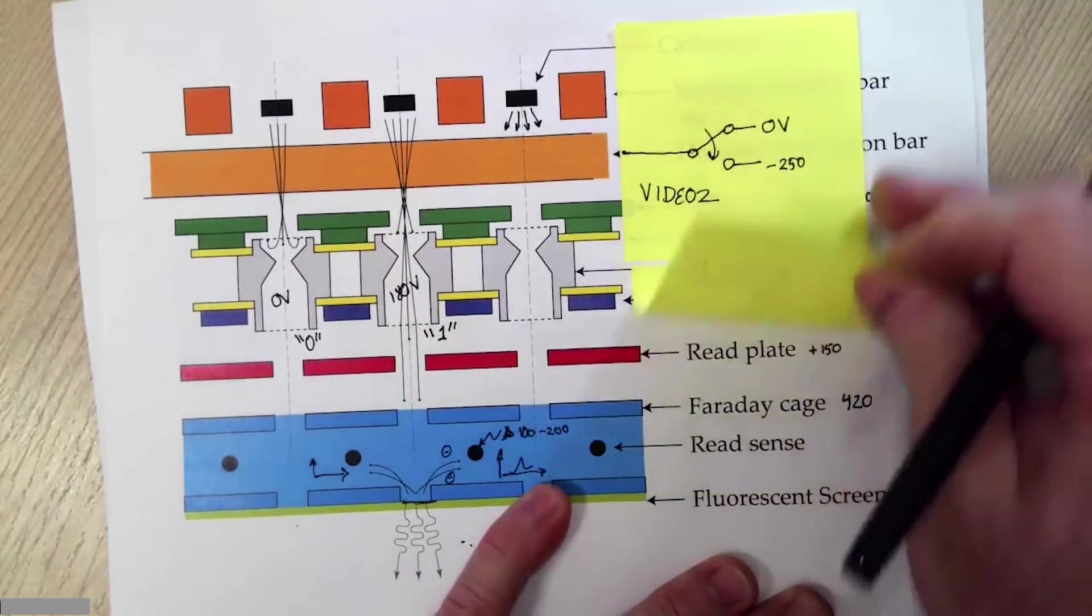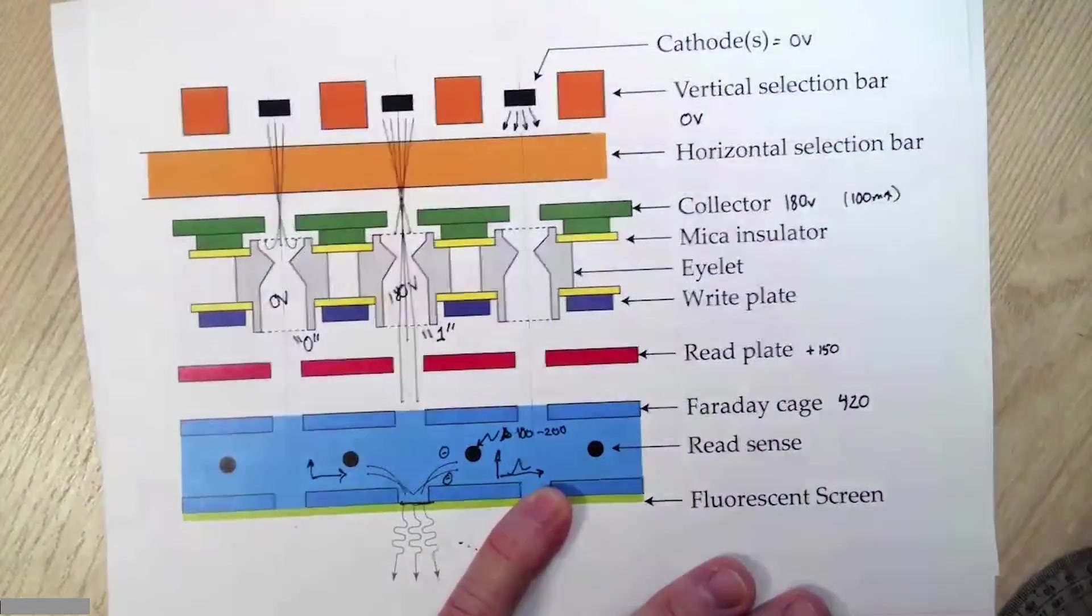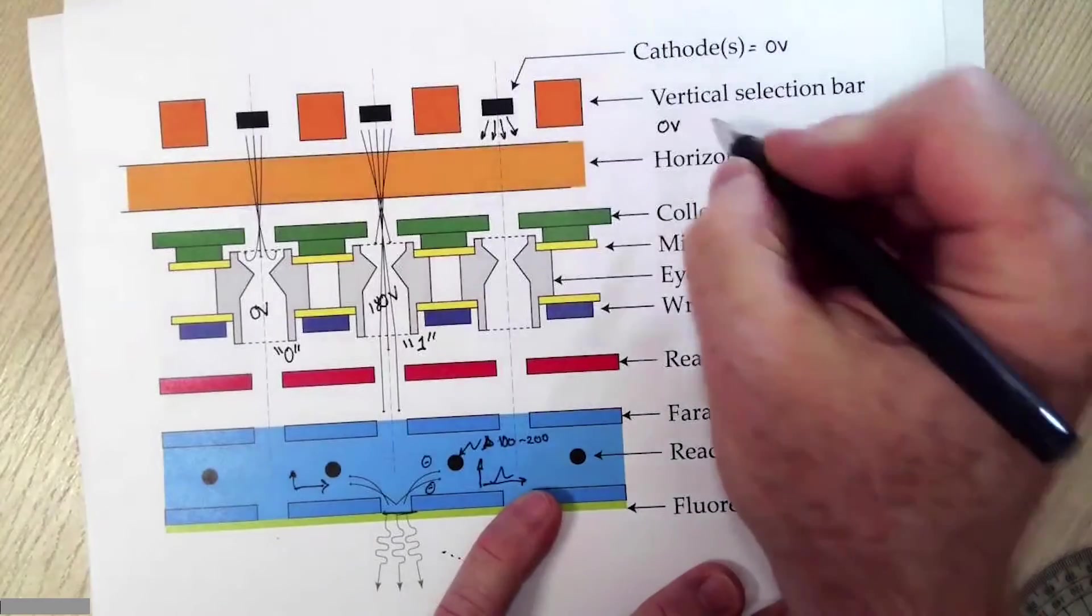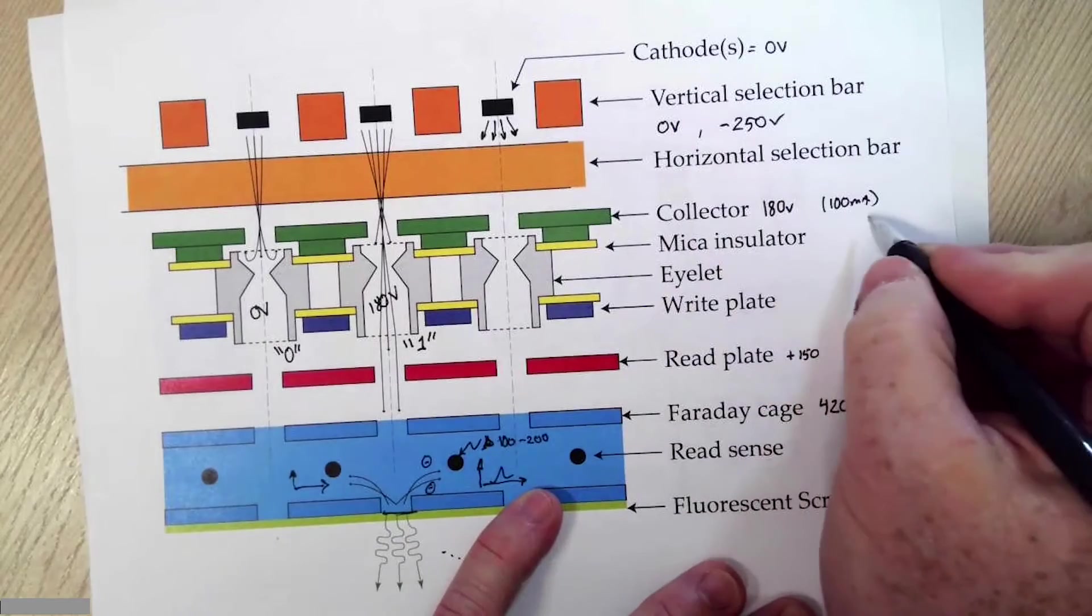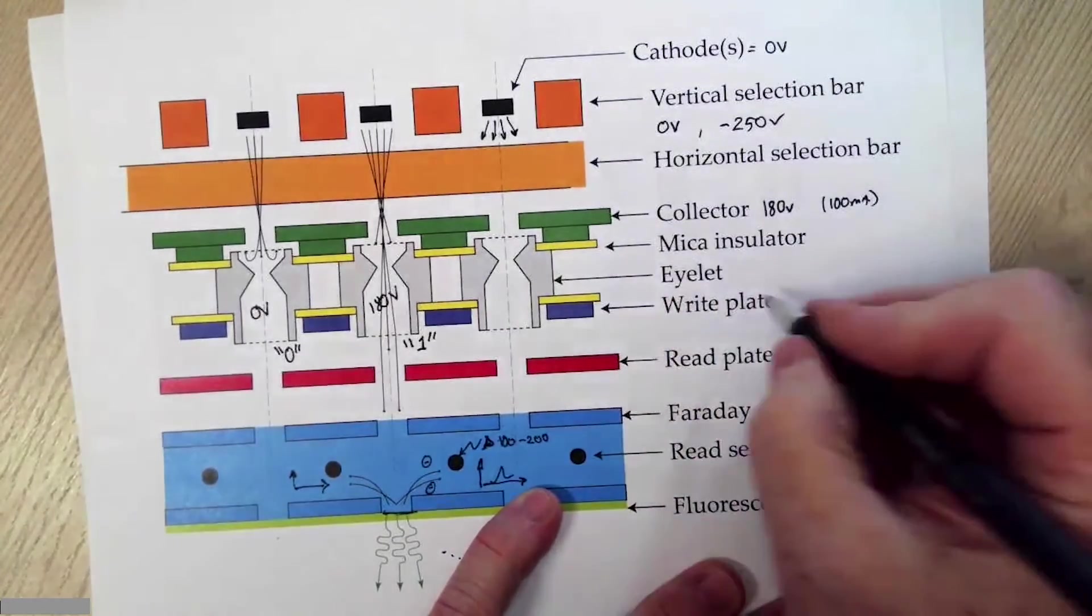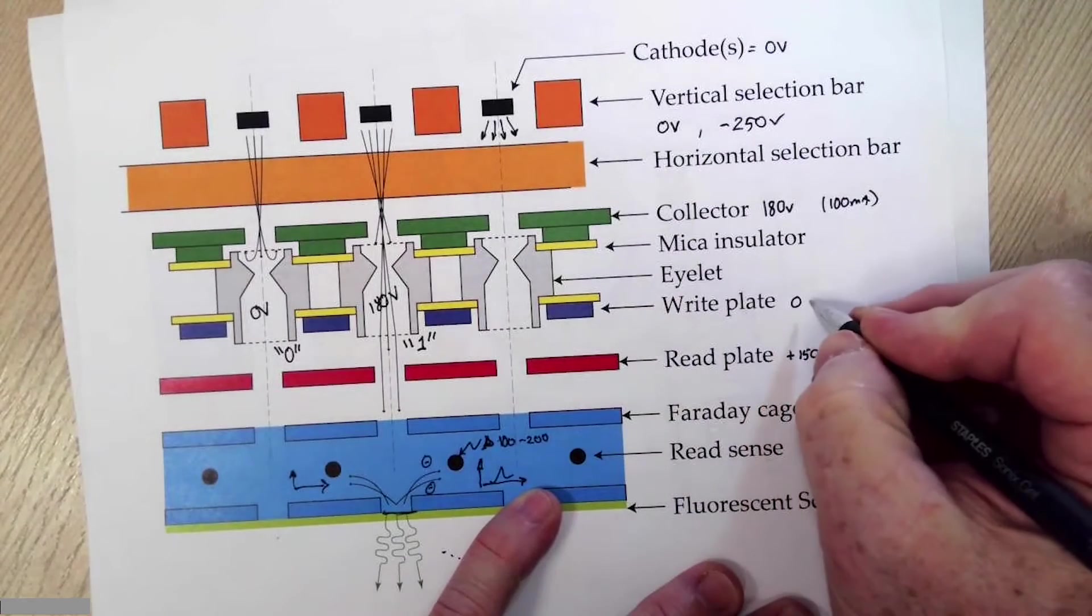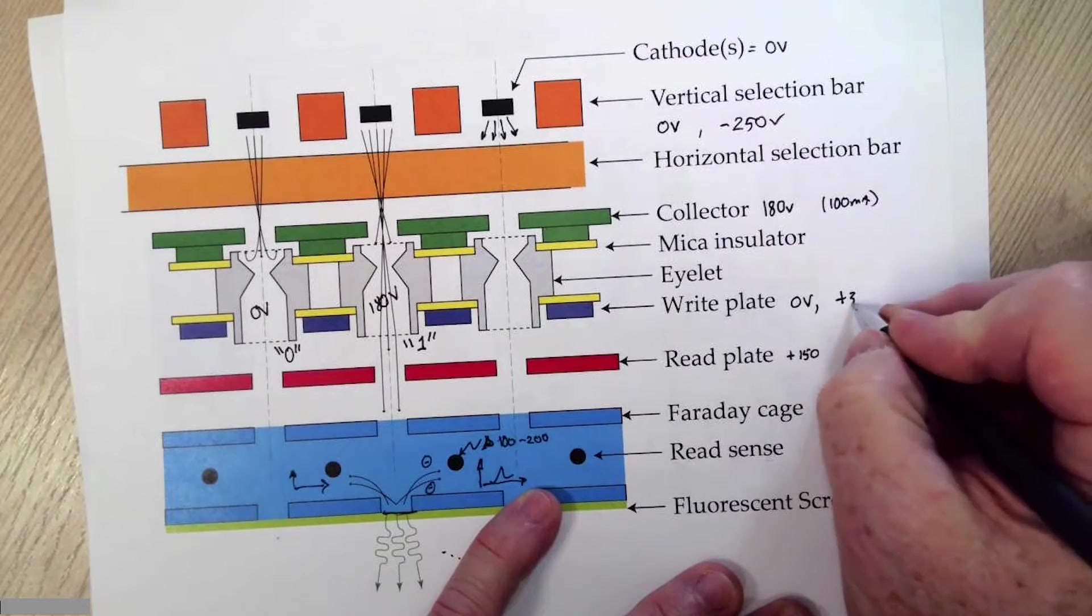So we have a game plan here for the potentials that we need. Let me just go through this again. Vertical selection bar, zero or minus 250 volts. Collector is fixed at 180, 100 milliamps. That's really the only thing that has significant current on it. The write plate, the idle state is zero volts. And if I'm trying to write, I need to pulse this to positive 360.